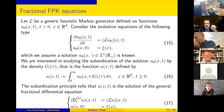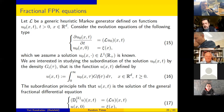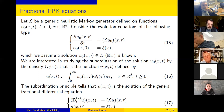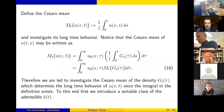Except for the stable subordinator, we have no precise formula for the density — only information about the Laplace transform in t and the double Laplace transform. This is the main technical problem. For a long time we spent considerable effort trying to get more information, and it didn't work. So we decided to change strategy: instead of studying the asymptotic of the solution directly, we study the Cesaro mean of the solution.